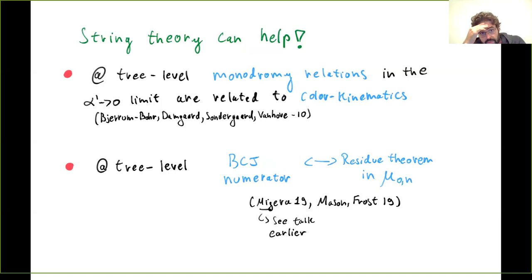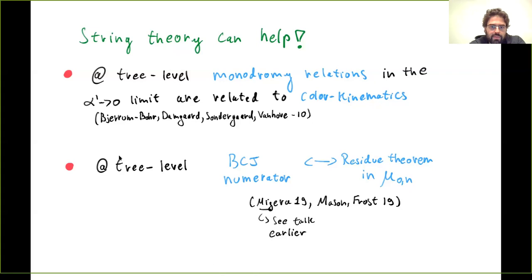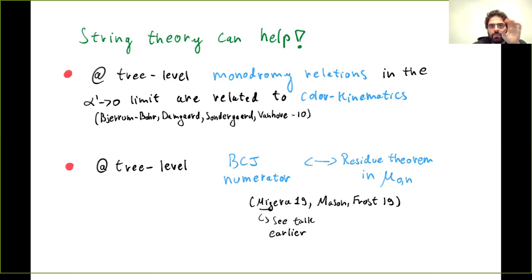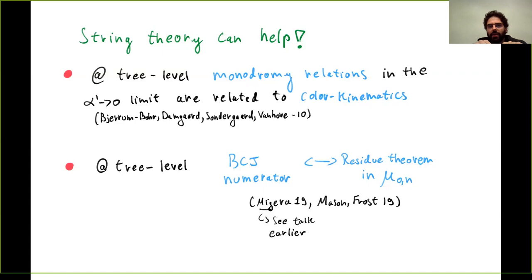One avenue is to try to use string theory. At tree level, there's a very interesting relation between string theory and color-kinematics numerators that comes from the monodromy relations. These are linear relations between string amplitudes with coefficients that are functions of the kinematics. When you take the field theory limit, you find that these relations are satisfied by color-kinematic numerators — string theory likes to organize its field theory limit in a BCJ-satisfying way, at least at tree level.